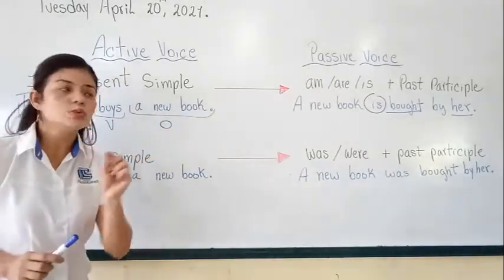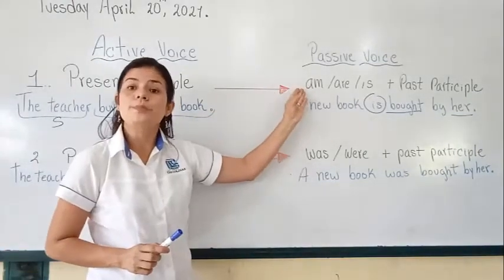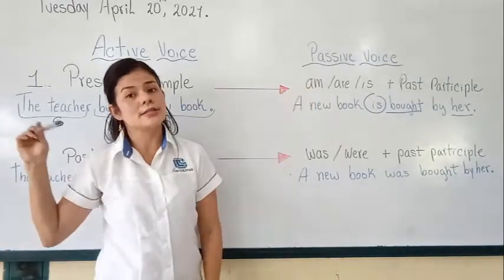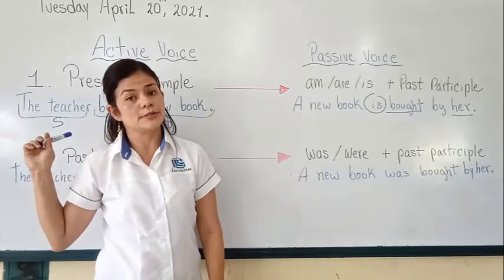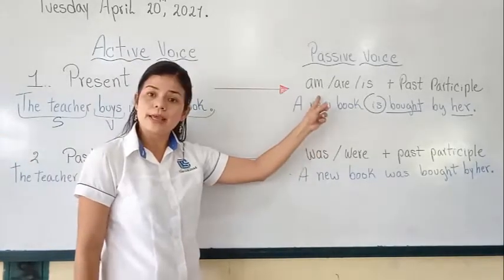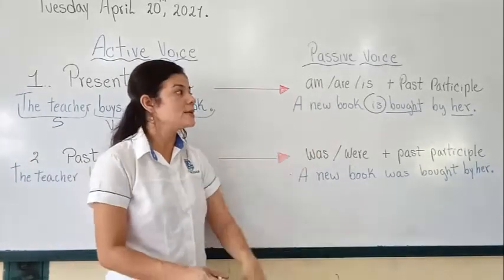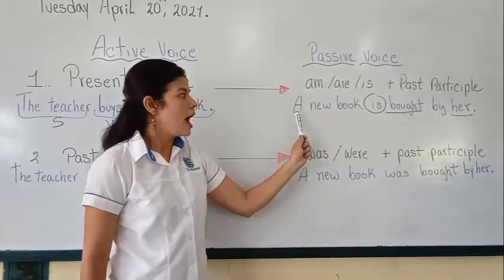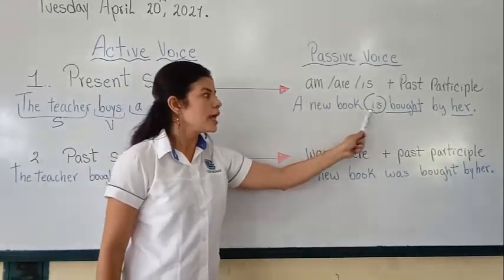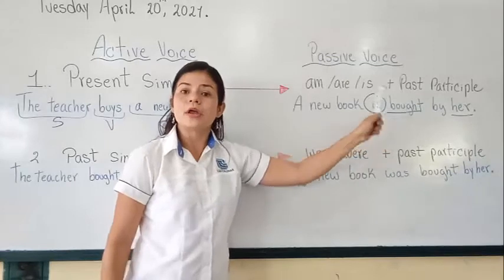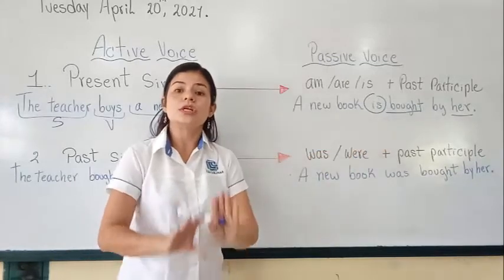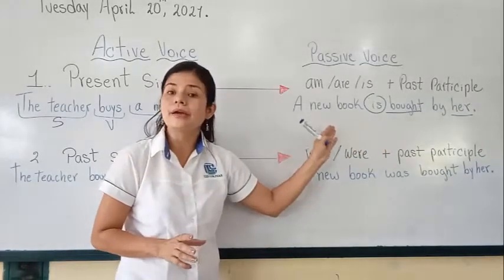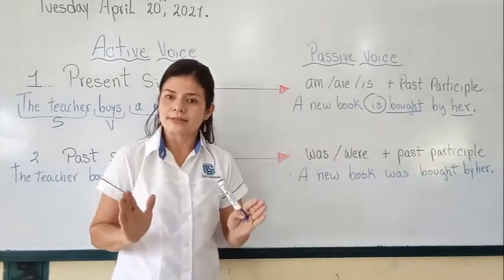Remember to choose the grammar instructions. The verb 'to be' in present simple — because your active voice is in present simple, your verb 'to be' is going to be in present simple. The passive voice is in present simple. For example, a new book is bought by her. Remember, we change the focus of the sentence, and the most important part here is the object of the sentence.